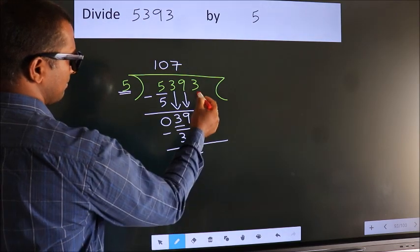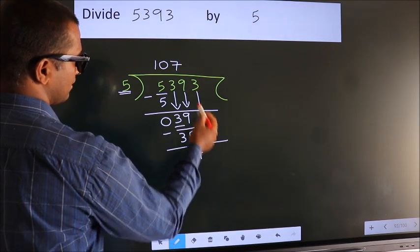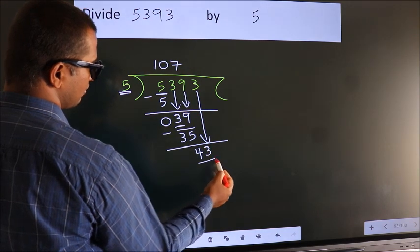After this, bring down the beside number. So 3 down. So 43.